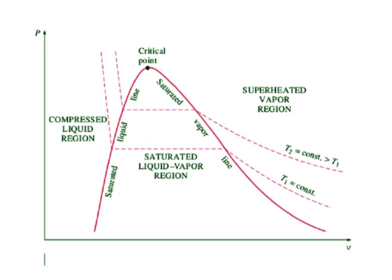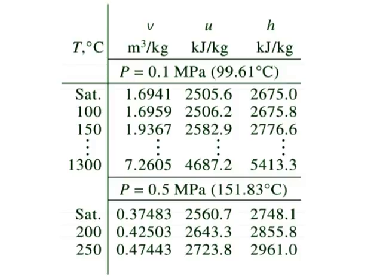Superheated vapor. In the region to the right of the saturated vapor line and at temperatures above the critical point temperature, a substance exists as superheated vapor. Since the superheated region is a single-phase region — that is, vapor phase only — temperature and pressure are no longer dependent properties and they can conveniently be used as the two independent properties in the tables. The format of the superheated vapor tables is illustrated here. In these tables, the properties are listed against temperature for selected pressures, starting with the saturated vapor data. The saturation temperature is given in parenthesis following the pressure value.